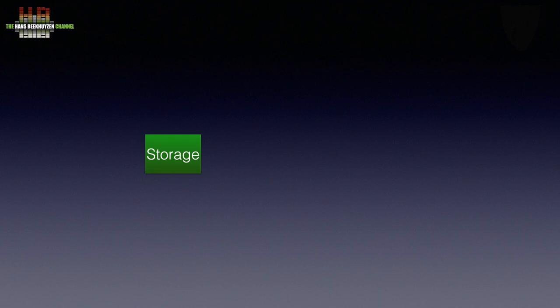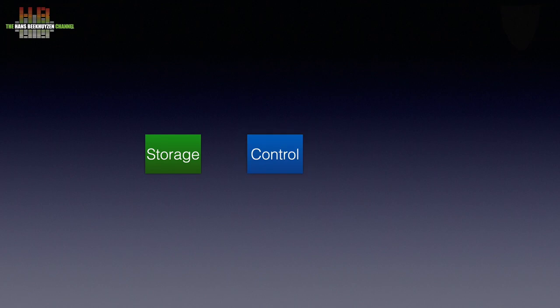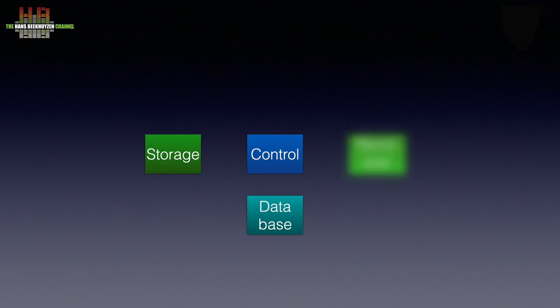Every digital audio player can be divided into a number of function blocks. Let's begin with storage — this is where the audio files are stored. These audio files will have some kind of labelling; in a CD player a CD has very rudimentary labelling, while in an advanced digital audio player this file might include over 100 metadata fields. A second building block I named control and the third database. A fourth function I named renderer, the fifth remote control. Please do realize that throughout this presentation these blocks represent functions, not necessarily physical devices.